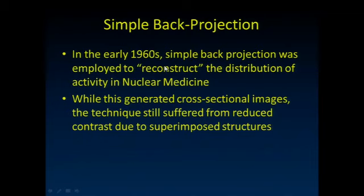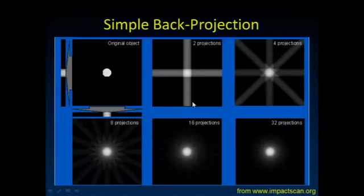In the early 60s, people started thinking about whether there was a way to do something better than just using a limited arc and blurring structures out—they're still in the way even if blurred. People started to think about the mathematics of how to reconstruct a cross-section of the image. I want to introduce you to the concept of simple back projection, which was the first idea to do that.